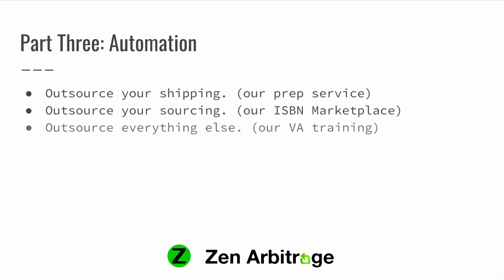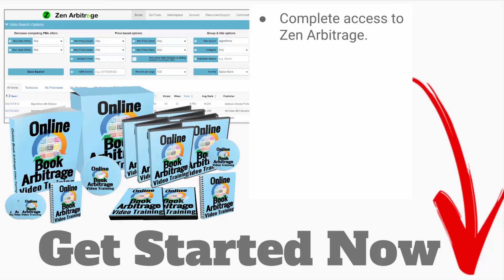We also have automation features. You can outsource your shipping with Zen Arbitrage — we will set you up with a prep service that will receive books on your behalf and ship them into Amazon for you, so you can run the whole business without ever seeing or touching a book. You can also outsource your sourcing. We have the ISBN marketplace — it's basically paying other people to search for you, and they sell you what they find for pennies on the dollar. It's one of the main reasons people sign up for Zen Arbitrage. And you can outsource everything else — I have a whole video on how to hire virtual assistants to basically do everything for you. That is our total integration system.